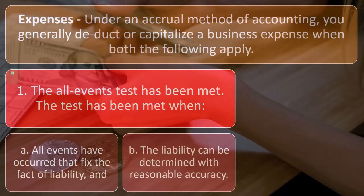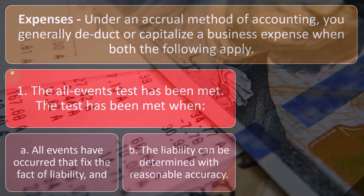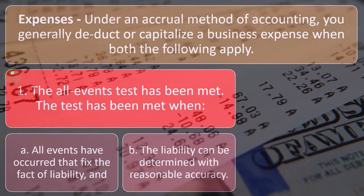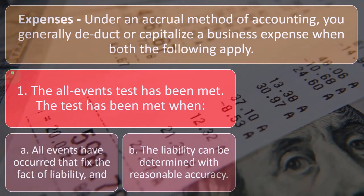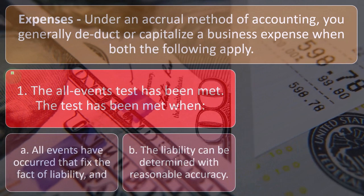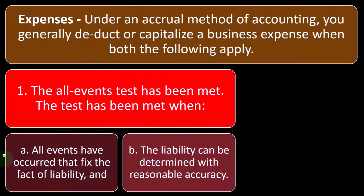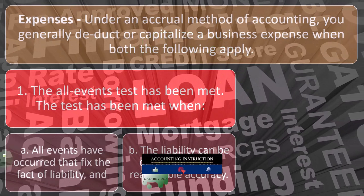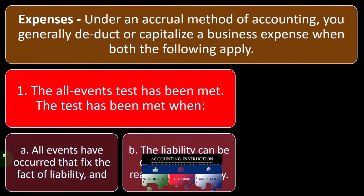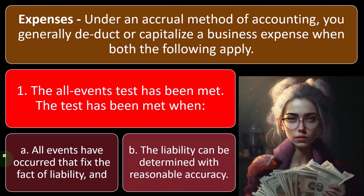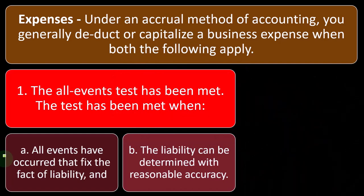Although if it was an easy transaction — you paid for something and got the services at that point in time — the accrual and cash methods would be the same. It's when there's a difference between when you incurred the expense and when you paid for it that the accrual and cash methods could result in a different timeframe for recording the expense. Basically, you want to record the expense when it has been incurred. All events have occurred that fixed the fact of liability, meaning you owe money because you have incurred the services — you have a contract, the services have been done — and you owe the money even if you have not yet paid it. The liability can be determined with reasonable accuracy; the contract is usually fairly straightforward, and you know how much you're going to owe after the work is done, even if you have not yet paid it.